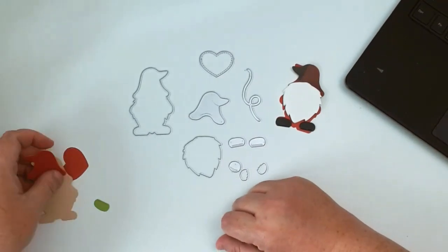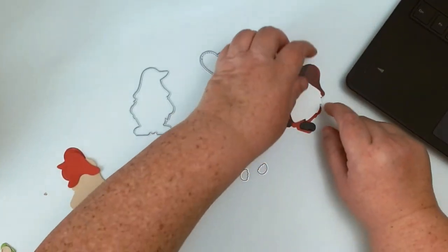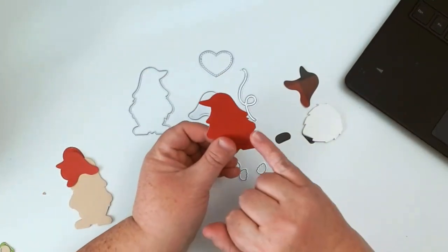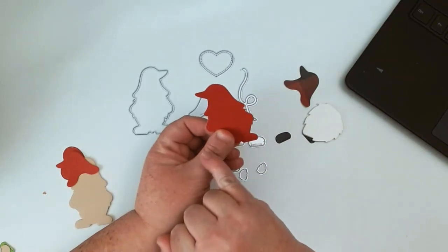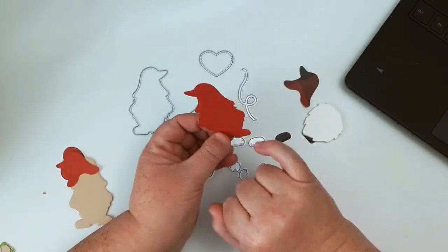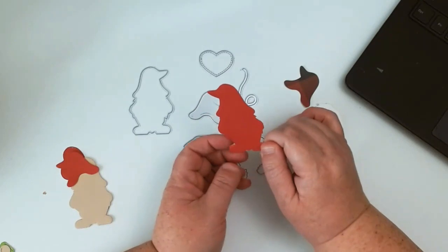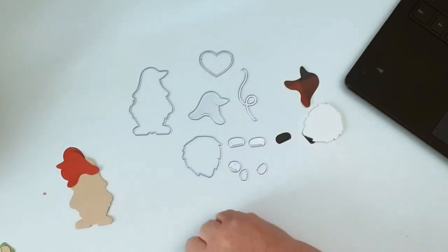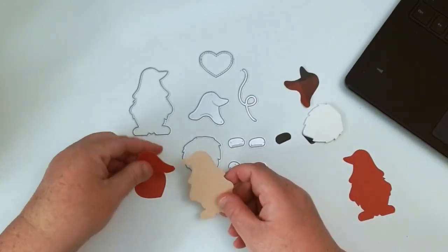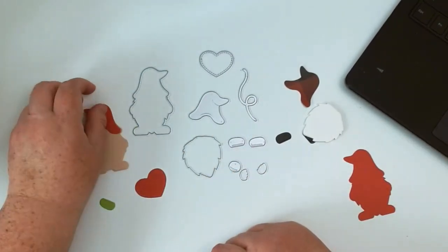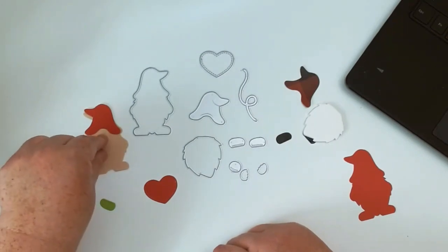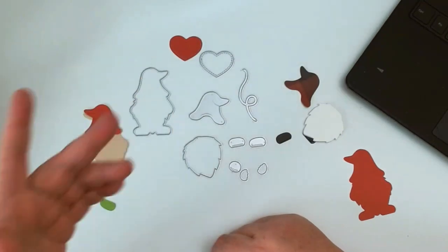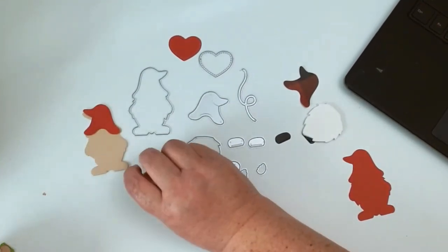For the girl, I went ahead and took my scissors and took that little piece off, and I also took this little piece off for the bottom of the beard. For her hat, I decided to do a red hat. I have the tan background because you'll see some of her face there. Here's the heart. And then for her shoes, I decided to do green.